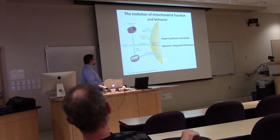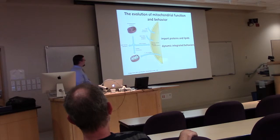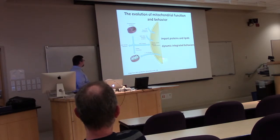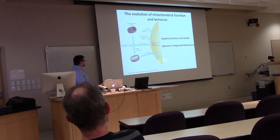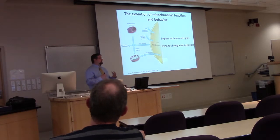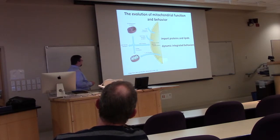One key eukaryotic innovation was the ability to import proteins that are translated in the cytoplasm into the mitochondria — allowing nuclear material to be translocated to the nucleus. The majority of the proteome being encoded by the nucleus allows the cell to coordinate the behavior of mitochondria with extracellular cues or metabolic needs, essentially controlling mitochondria through this genetic landscape.